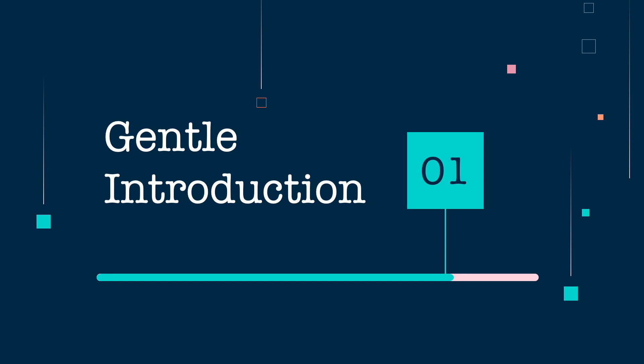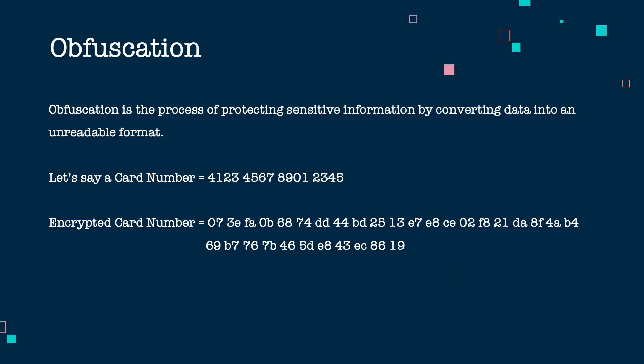Let's look at general cryptography techniques. What is cryptography or data obfuscation? Data obfuscation is the process of protecting sensitive information by converting it into some unreadable format. For example, you see a card number and I do not want to store it in clear, so I will encrypt this card number into an unreadable format. This process of protecting the data is called data obfuscation.